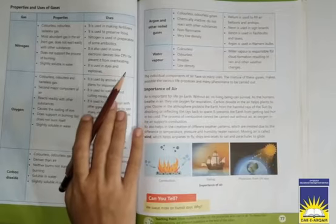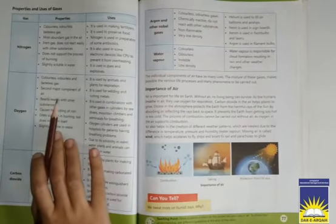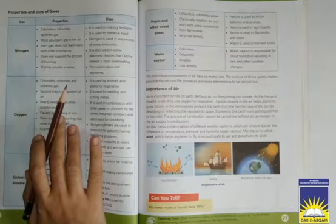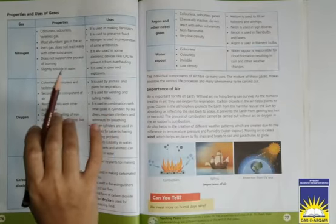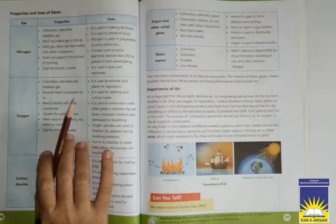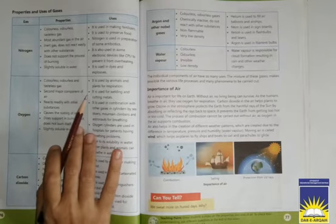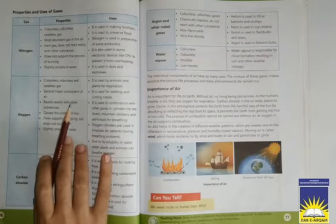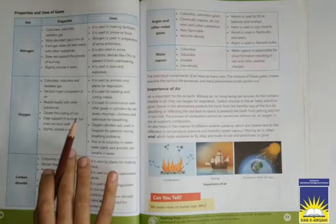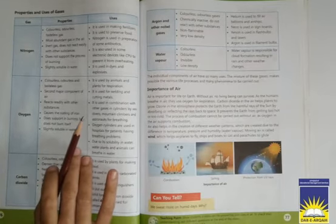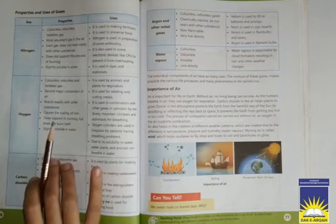Oxygen is colorless, odorless, tasteless gas, second major component of air. Reacts readily with other substances, causes the rusting of iron, does support burning but doesn't burn itself, slightly soluble in water. Like nitrogen, oxygen bhi colorless, odorless, or tasteless gas hai, lekin ye nitrogen se kam amount mein hoti hai and it is the major cause of rusting. Most importantly oxygen support karti hai burning process mein aur soluble hai water mein.